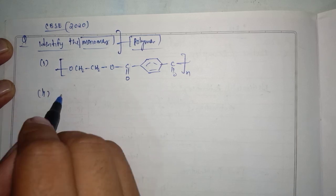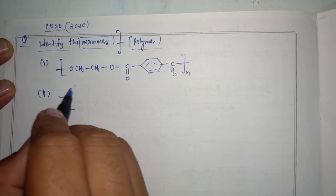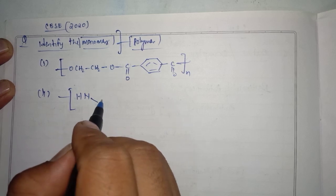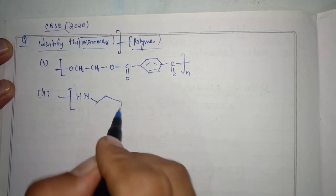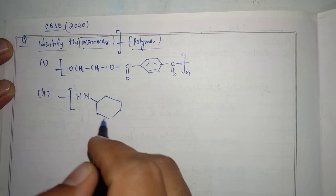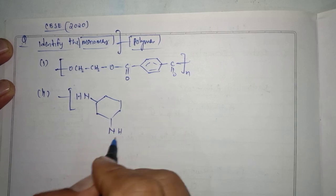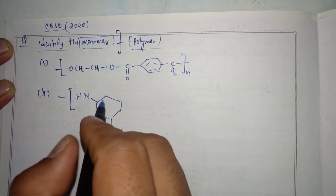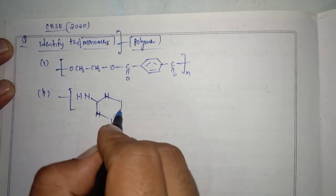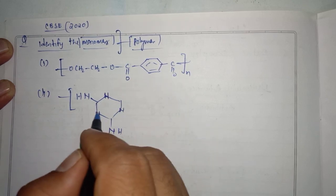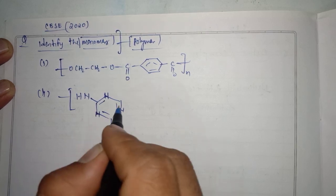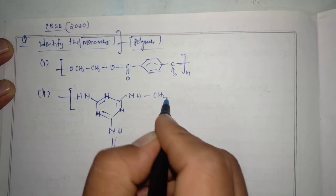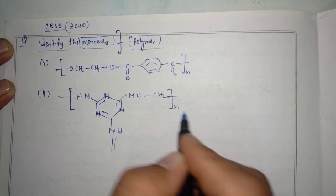The second one is HN, that is NH, then ring structure and here also NH is there for the chain is getting formed. At this position nitrogen, at this position nitrogen, and at this position also nitrogen, and there is a double bond arrangement present. Then NH, CH2, bracket close base N.